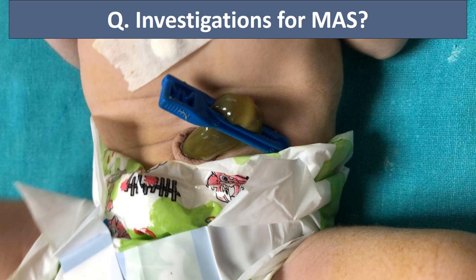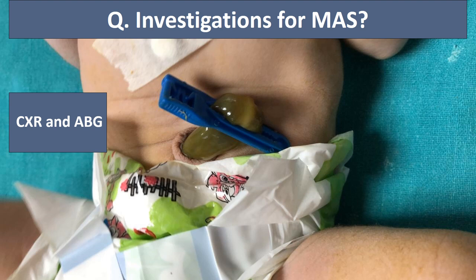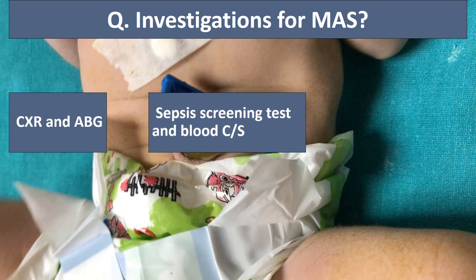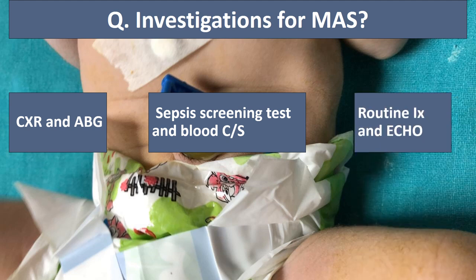What investigations will we perform in meconium aspiration syndrome? A chest X-ray and arterial blood gas analysis should be done. We need to rule out infection by sepsis screening and confirm with blood culture and sensitivity. Routine investigations should be performed, and an echocardiogram should be done to assess whether the child has developed persistent pulmonary hypertension.